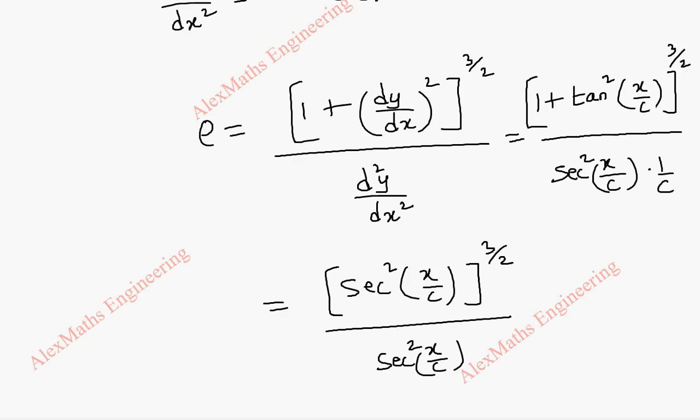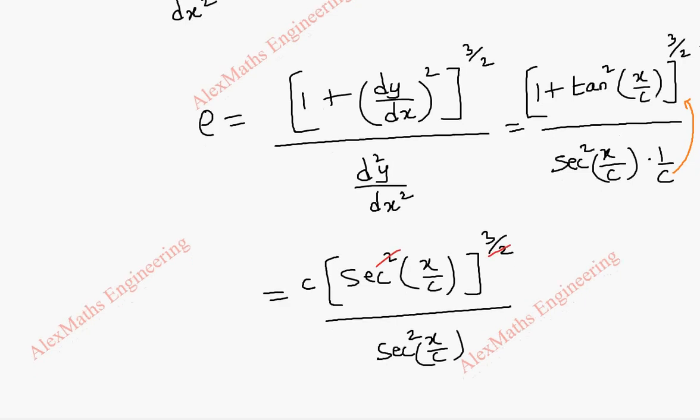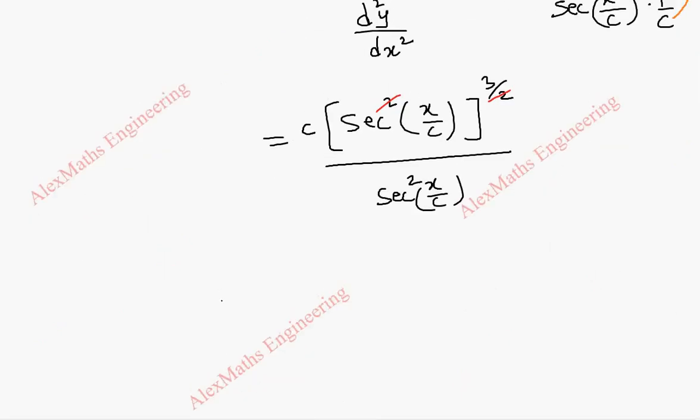And this 1/c we move to the numerator as a product, so we can write c here. At the same time we can cancel this 2 and 2 in the power. So in the numerator we have secant cube. So the radius of curvature ρ is c times sec³(x/c) whole divided by sec²(x/c).